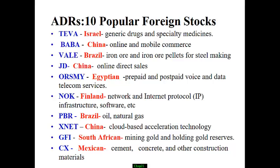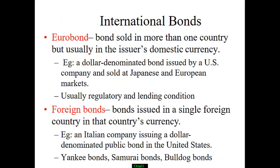For foreign investment coming to the US, ADRs is one way of selling stock and raising money. Another way of raising money is to sell bonds. For international finance, these bonds are called international bonds. There are two types: one is euro bonds, and the other is foreign bonds.